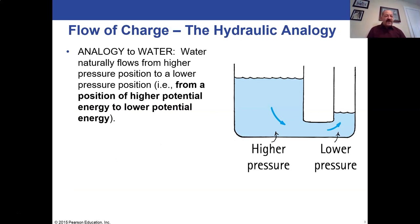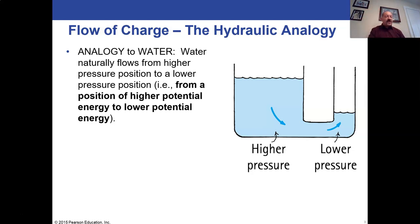Whenever most introductory courses cover electricity and the flow of electric charge in circuits, we like to use what's called the hydraulic analogy — the analogy to how water flows in pipes. Water naturally flows from a high level to a low level because there's higher pressure and more potential energy up high. Water that's up higher has more gravitational potential energy, pulling it down because of its weight and height above the ground.